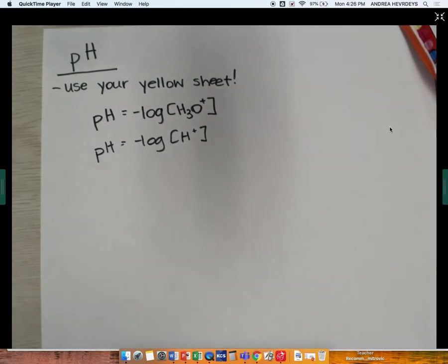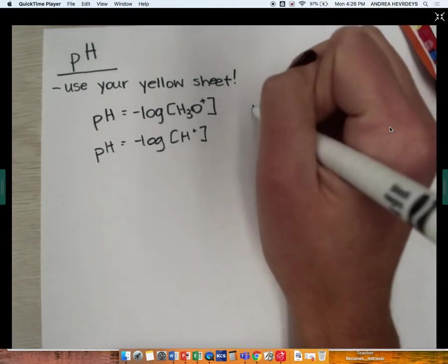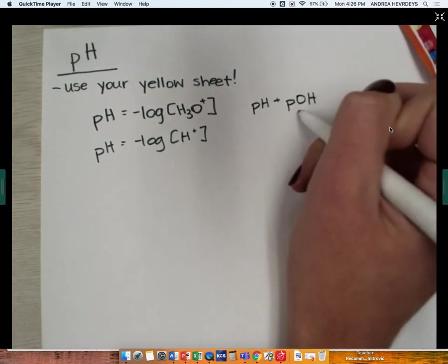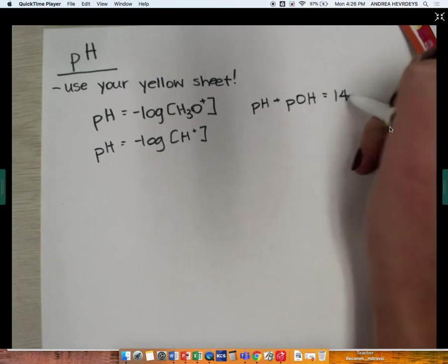If you go on to take AP Chem, there's pKa's and there's p other things. On your Knox County yellow sheet, you get other formulas as well. You get that pH plus pOH, which is the negative log of the hydroxide ion concentration, and will always equal 14.